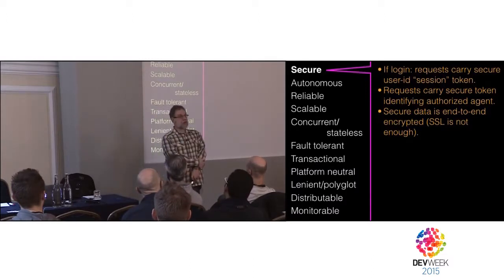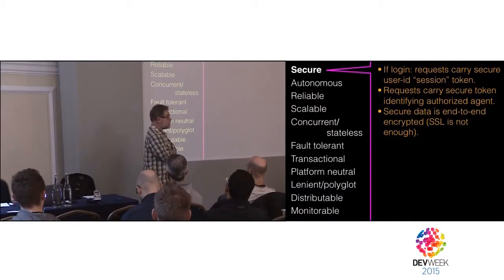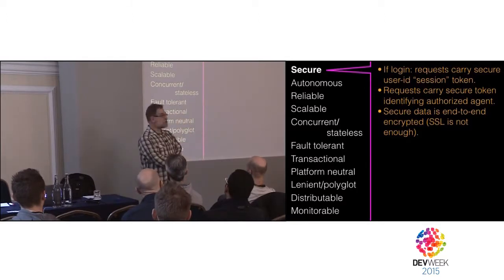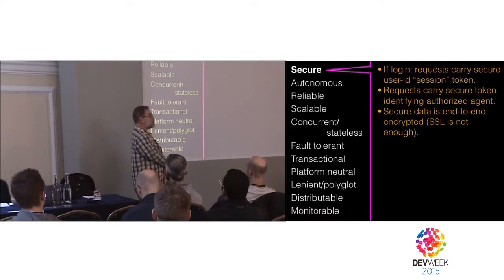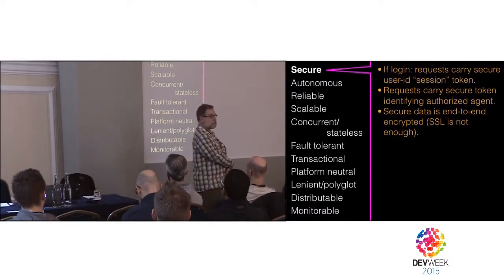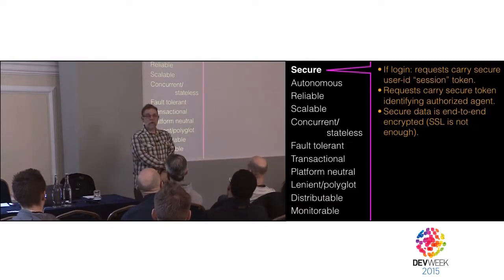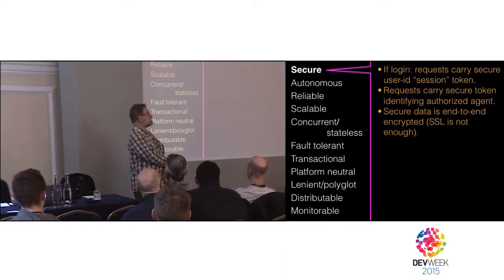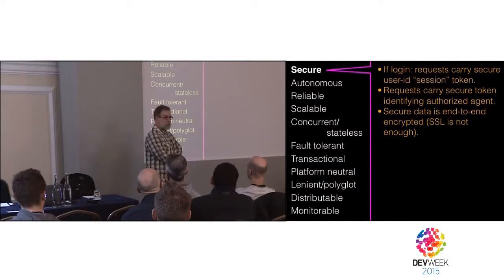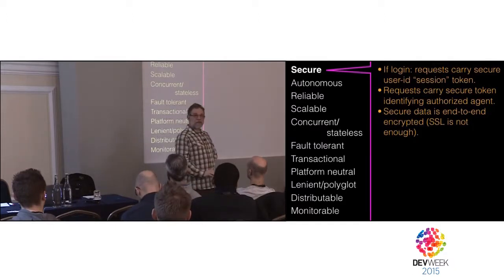A denial-of-service attack against a microservice — where you just start making massive numbers of service calls — is very easy to do. So we have to protect ourselves with a token: at the very beginning of processing, you check if the token is valid and reject the call if not. If you're really going to take security seriously, you have to do this at every level. You can't just check the token when the REST call comes in and imagine you don't need to look at it again, because hacks will go deeper into the data center past the REST handler. You have to check tokens at every service level.